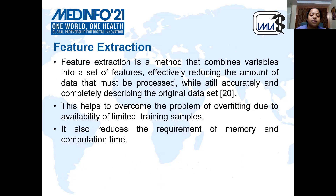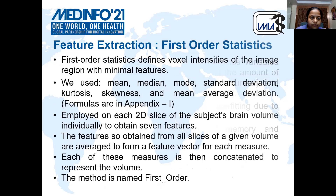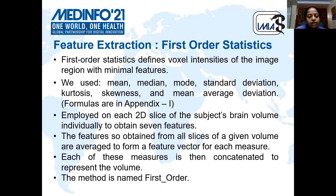The feature extraction step is a method that combines variables into a set of features, effectively reducing the amount of data that must be processed while still accurately and completely describing the original data sets. This helps to overcome the problem of overfitting. In this step, we have explored four different statistical and textural feature extraction methods.